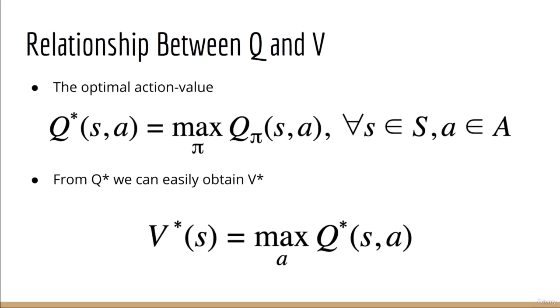So far, we haven't needed to invoke the action value function, but let's see how it's related. First, the optimal action value is defined similarly to the optimal state value. It's the max over all possible policies pi of q given pi. We'll call this q star. This must hold over all states and all actions. Furthermore, the optimal state value is equal to the max over all actions from the optimal action value. So, from this we can define the relationship between q and v.